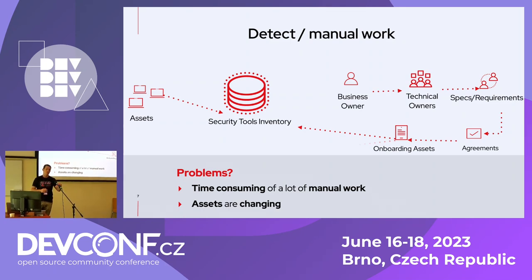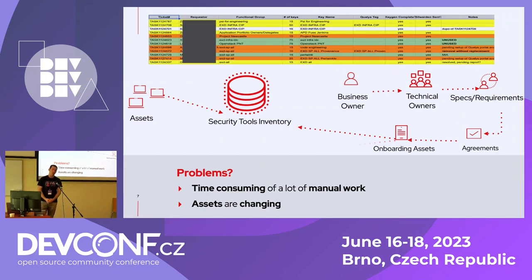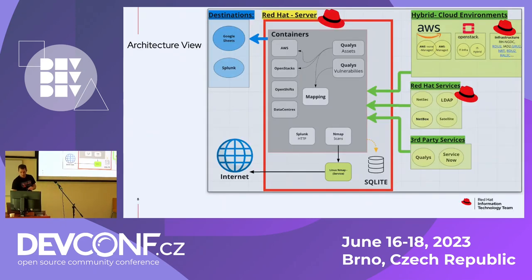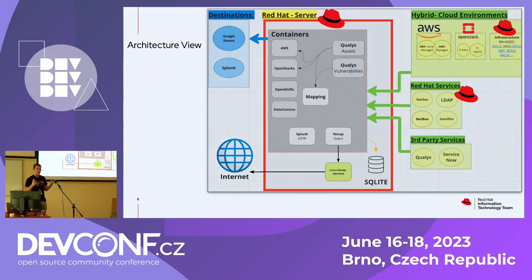We really started with just a spreadsheet to track that information — who we contacted, when, how many assets they had — and we colored that in. That's not very scalable. There was a definite need for automation, no doubt. We started looking at how we could put that into scripting. What you see here is our architectural design of the current system.